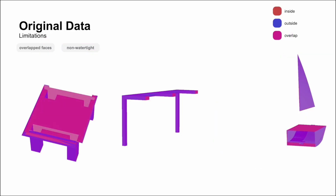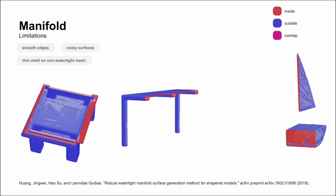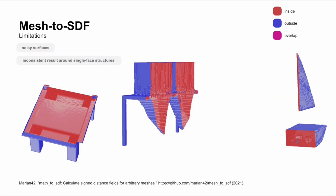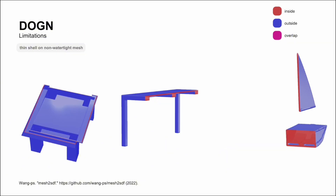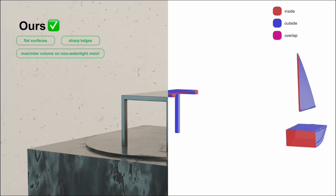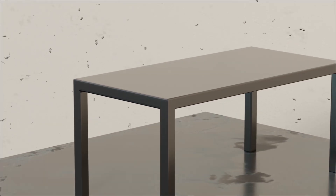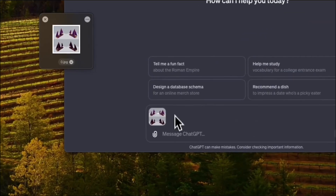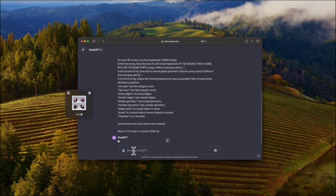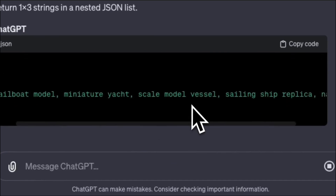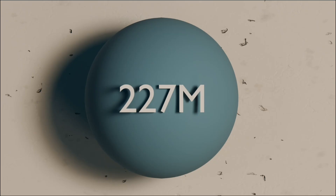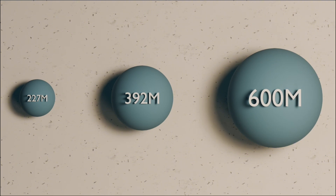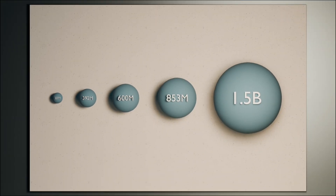To address the limited availability of high-quality 3D datasets, we developed a customized remeshing method that converts 3D data into watertight meshes and then into occupancy fields, meticulously preserving essential geometric features such as sharp edges and flat surfaces. Moreover, we utilize GPT-4V to create robust annotations that highlight important geometric characteristics. With the aid of our data processing pipeline and model design, we progressively train geometry models at different scales.